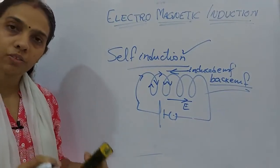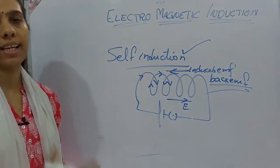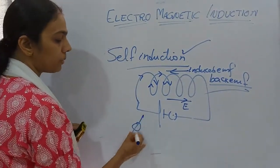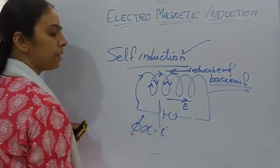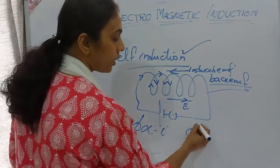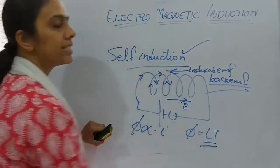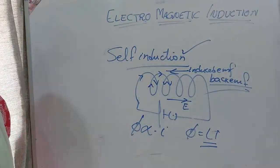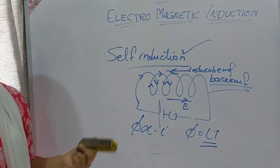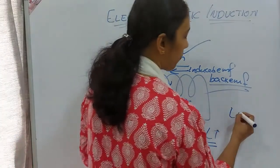In self-induction, the self-induced flux is proportional to current: Φ = LI, where L is called self-inductance or the coefficient of self-induction. Therefore, L = Φ/I.